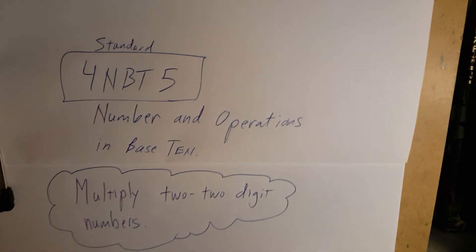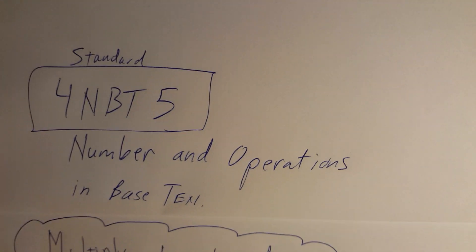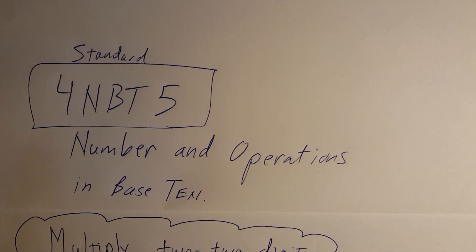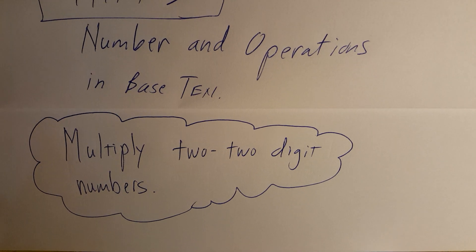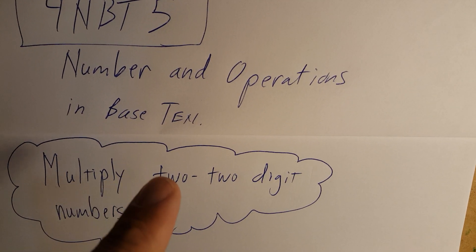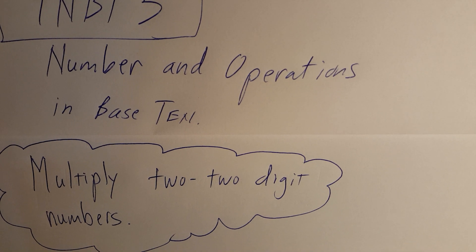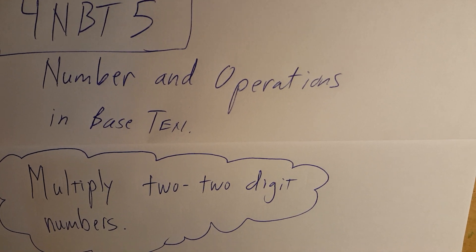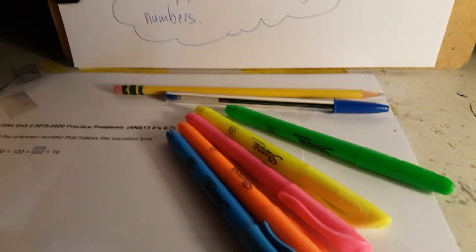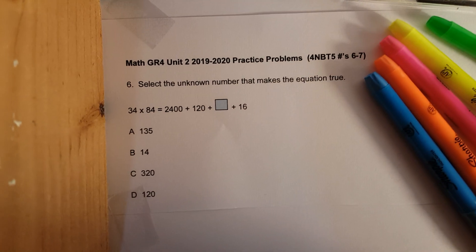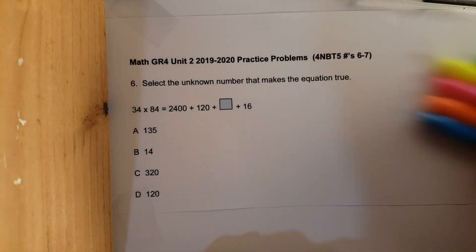Welcome back. We are continuing to work on standard form BT5, numbering operations in base 10. We will now move on to multiplying two-digit by two-digit numbers. This is problem number six — let's mark it up and get started.